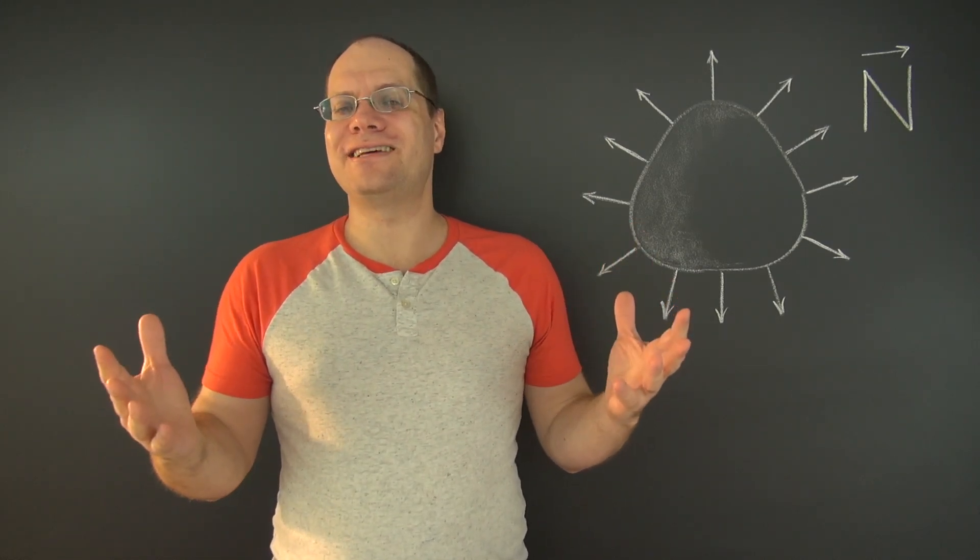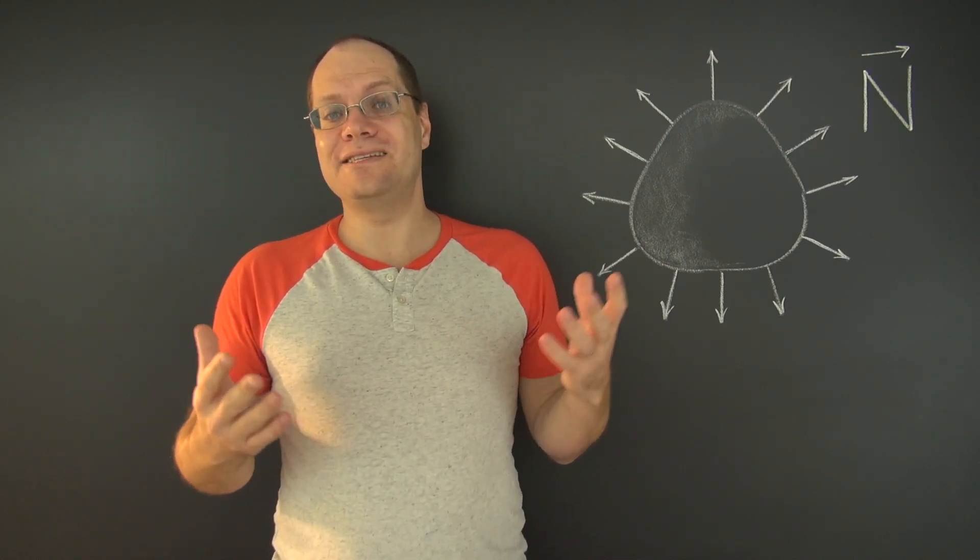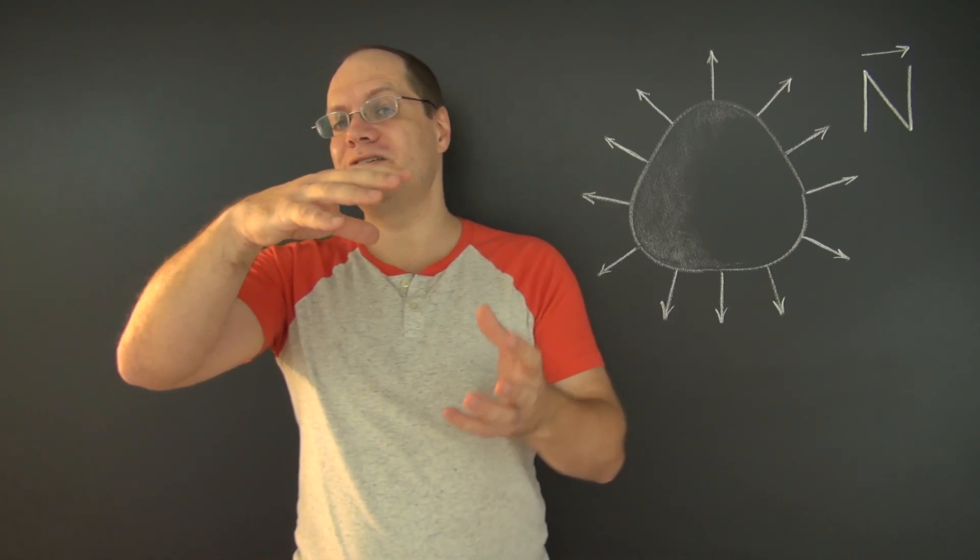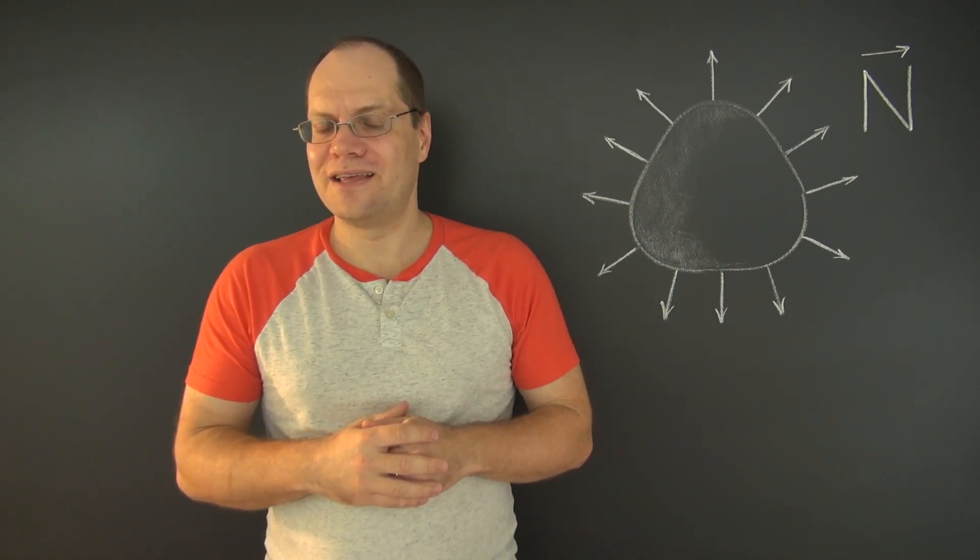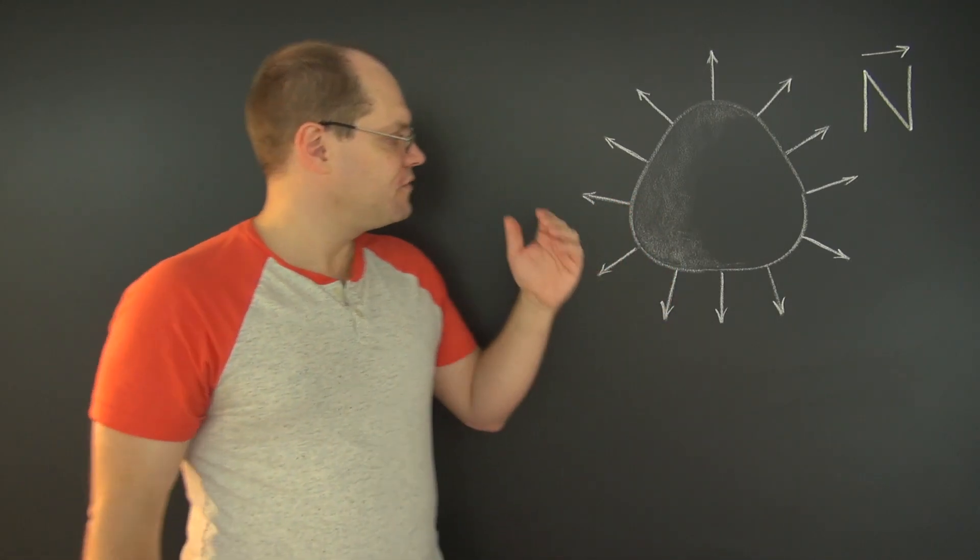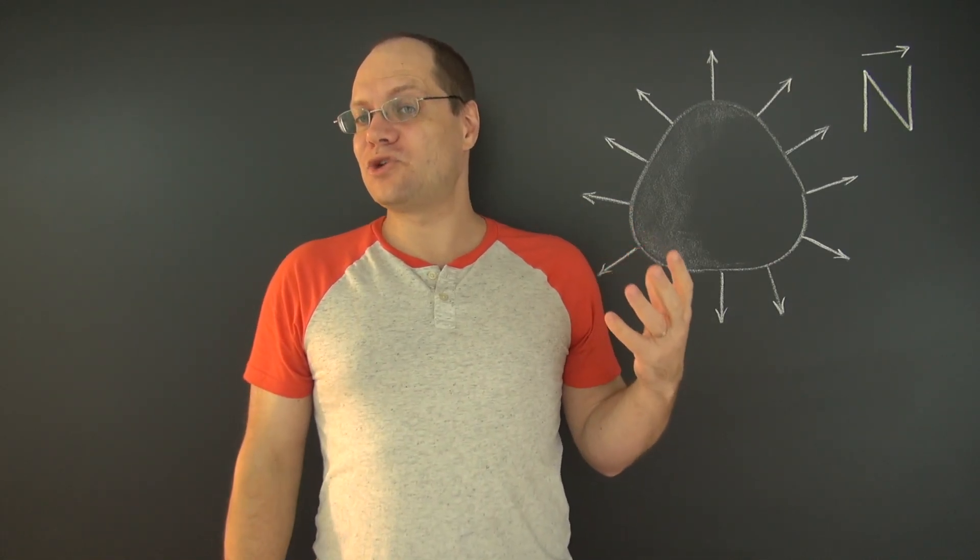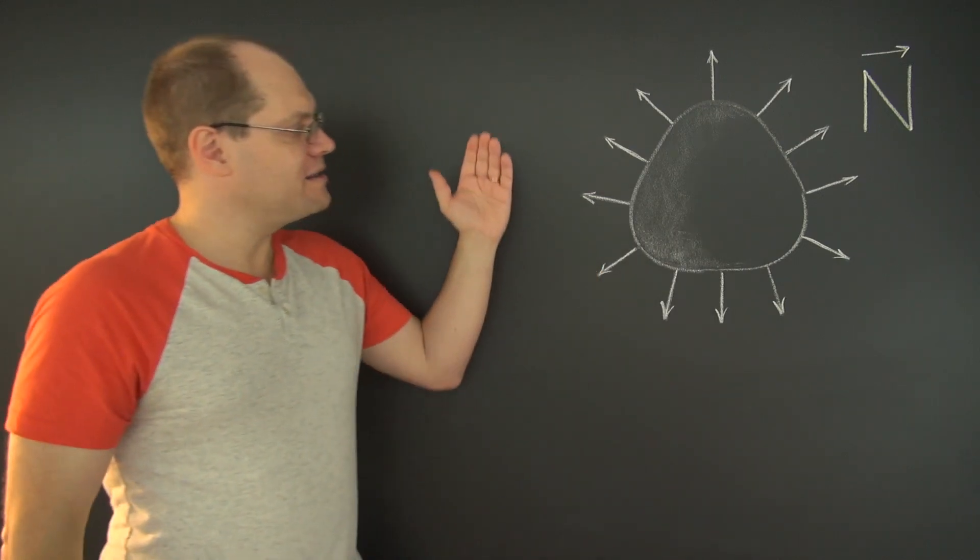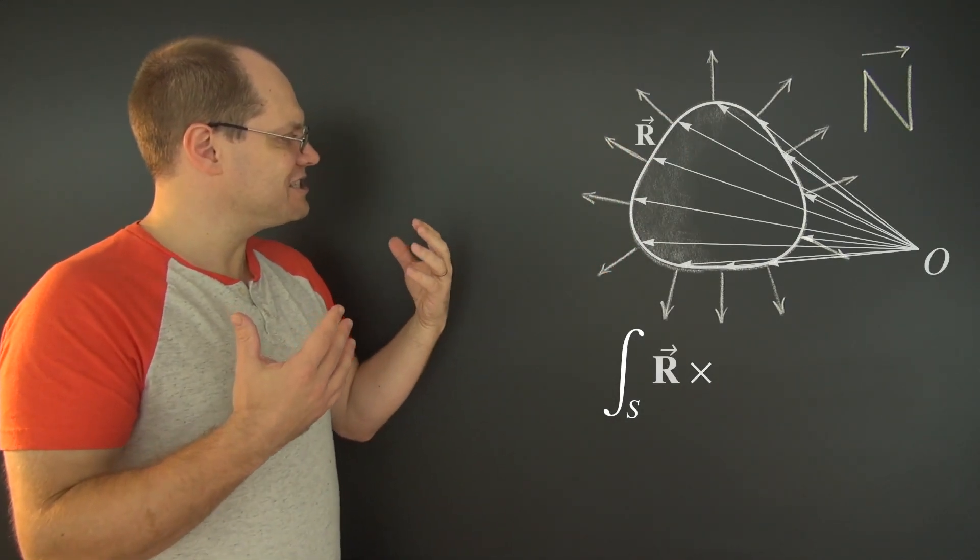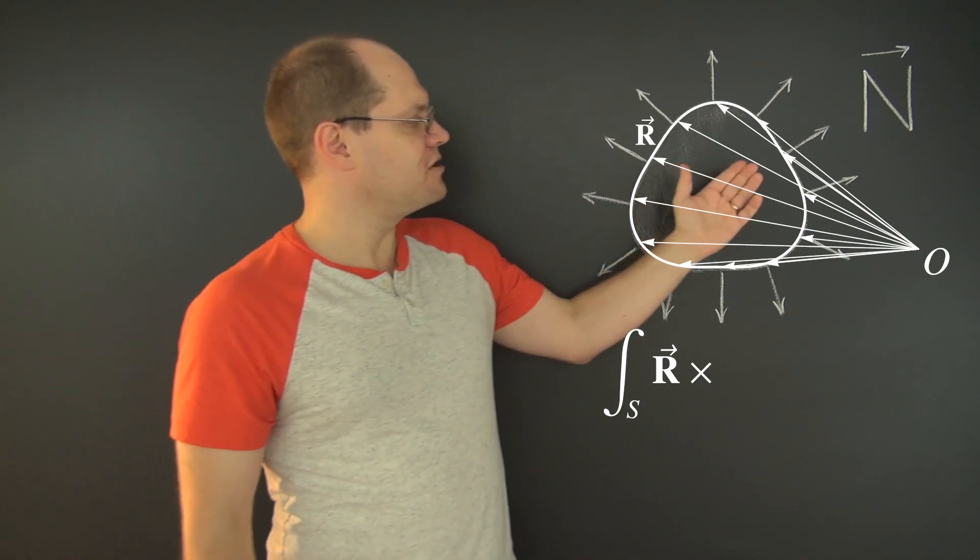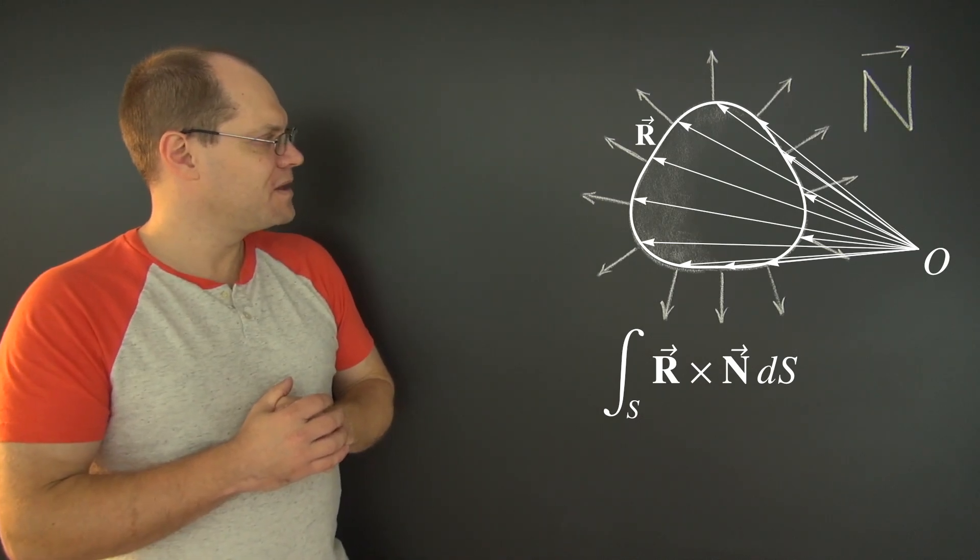Interestingly, this physical example suggests another integral relationship. Indeed, such a balloon will not spontaneously rotate under the influence of pressure from within. Therefore, the net torque of the force of pressure should also be zero. And that torque is, of course, expressed by the surface integral of the cross product of the position vector with the force of pressure, which we assume is proportional to the unit normal.